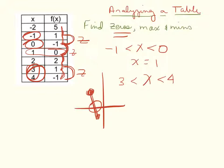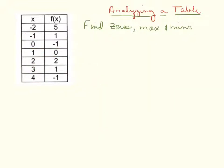That's finding zeros from your graph or from your table, pretty simple. Let's find mins and maxes. For mins and maxes, what you're looking for is a change from decrease to increase or increase to decrease. To determine that, we look at the numbers. There's 5, I went down to 1, I went down further to negative 1.